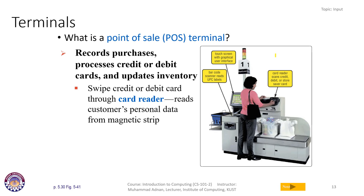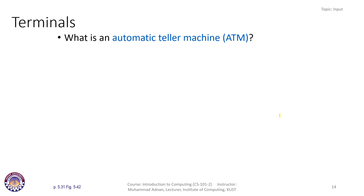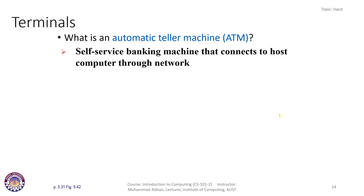We also have Point of Sale (POS) terminals, which you commonly see in large superstores and utility stores. They record purchases, process credit and debit cards, and update inventory. You can swipe your credit or debit card through the card reader, which reads the customer's personal data from the magnetic strip. Utility stores, canteen stores, and departments use them to process a large number of transactions in a short amount of time.